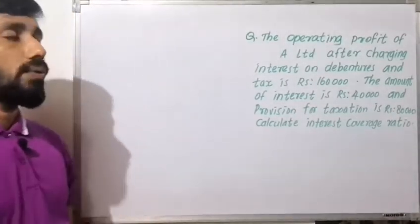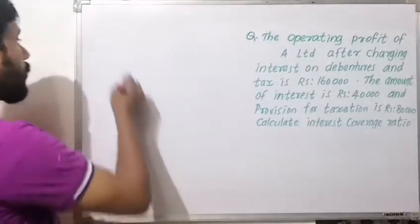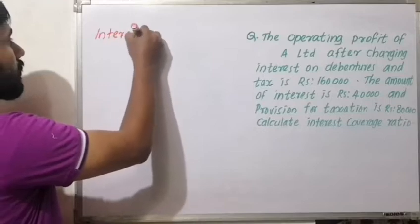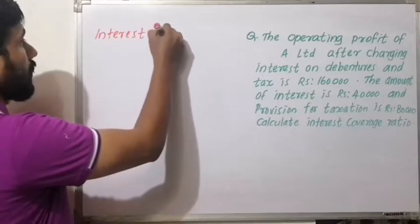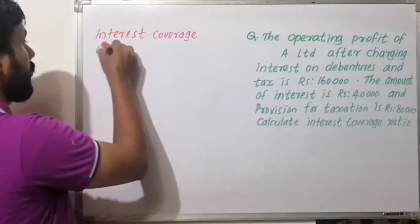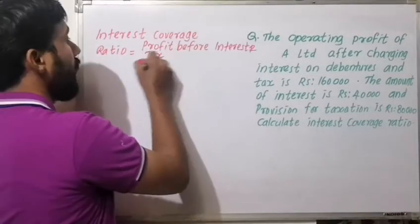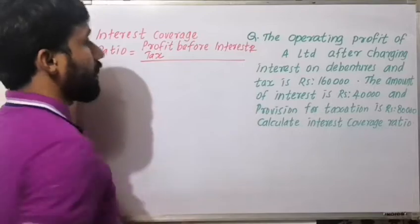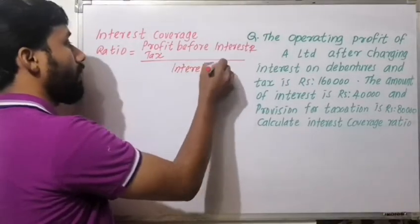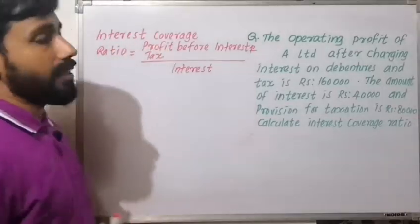To calculate the interest coverage ratio, we use the formula: Interest Coverage Ratio = Profit Before Interest and Tax divided by Interest. We need to first determine the Profit Before Interest and Tax.